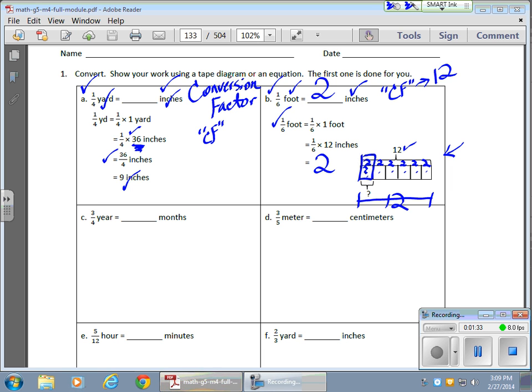Okay. Over here, taking a look at this next guy here, I want three-quarters of a year. And I need to convert that into months. Well, my CF, or my conversion factor, months to years is 12. I have 12 months to a year. I can set that up with a nice little diagram.